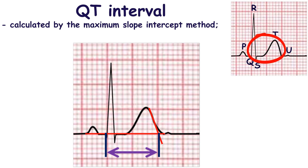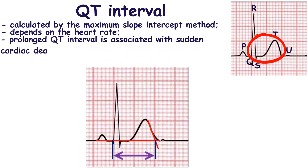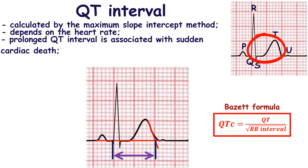The QT interval is measured from the beginning of the QRS complex to the end of the T wave. The maximum slope intercept method is used to determine the end of the T wave — it is the intercept between the isoelectric line and the tangent drawn at the maximum slope of the T wave. The QT interval depends on heart rate: it prolongs at a slower heart rate and shortens at a faster heart rate. To account for the influence of heart rate, many correction formulas have been developed. Among them, the Bazette formula is used most often: QT corrected equals QT divided by the square root of the RR interval.